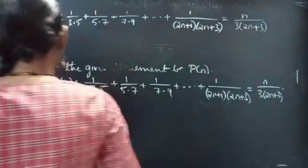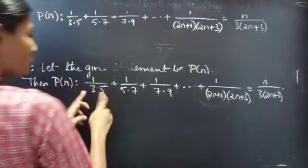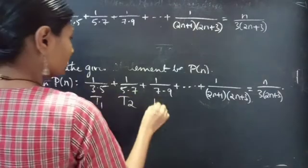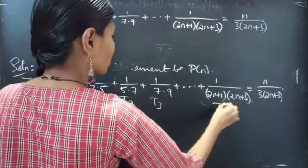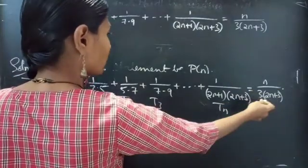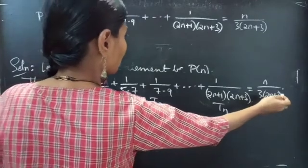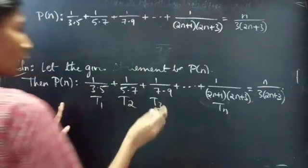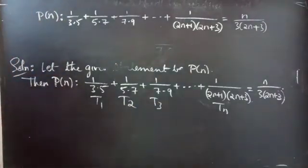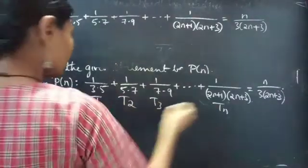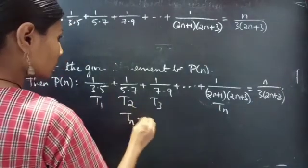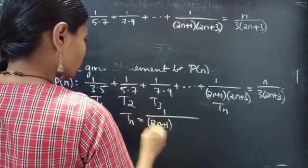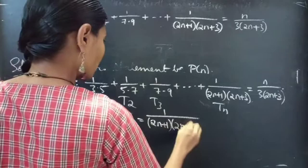So here we have n terms: first term, second term, third term, plus so on. The nth term equals n by 3 into (2n+3). Consider nth term t_n equals 1 by (2n+1) into (2n+3).